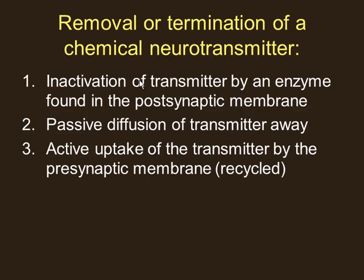Enzymatic destruction is especially important for acetylcholine at the neuromuscular junction. When a neuron fires a skeletal muscle, it releases acetylcholine, which binds and causes muscle contraction. If you couldn't turn off acetylcholine, your muscles would constantly contract — tetany. That's what happens in tetanus: the muscles can't relax. So having an enzyme in the synapse to break down acetylcholine is critical.